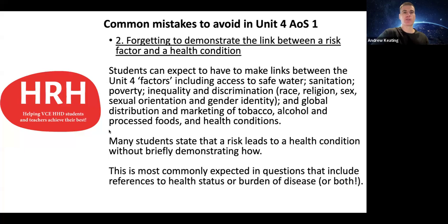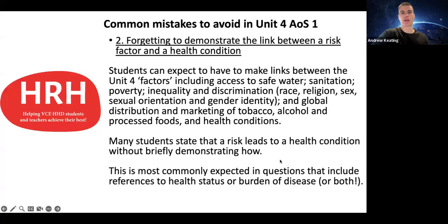The second common mistake is forgetting to demonstrate the link between a risk factor and a health condition. This is typically relevant when looking at factors in Unit 4 such as safe water, sanitation, and poverty. When linking these in an answer about health status or burden of disease, students often just say, for example, that a lack of safe water might contribute to diarrheal disease — but there needs to be a brief link demonstrating how that factor actually contributes to the health condition.